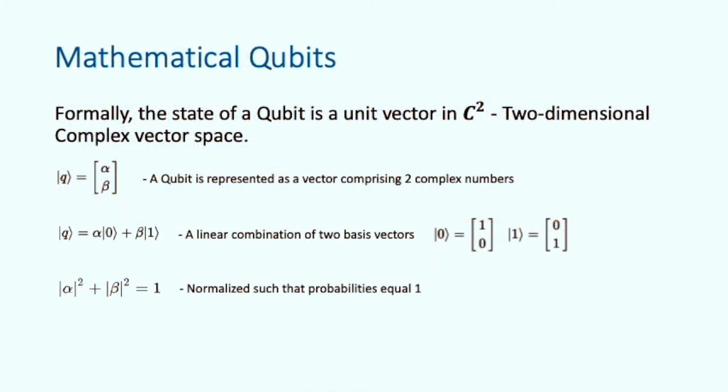Physical qubits, regardless of their modality, have a common mathematical representation. Formally, a qubit is a unit vector in C2 or two-dimensional complex vector space. This means that the alpha and the beta in our vector are complex numbers. This notation on the left is called Dirac notation or bracket notation, and it's simply a convenient way of representing a vector.